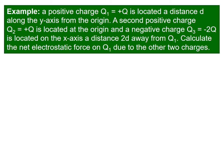For example, a positive charge Q1 is located at distance d along the y-axis from the origin. A second positive charge Q2 equal to plus Q is located at the origin, and a negative charge Q3 equal to minus 2Q is located on the x-axis, a distance 2d away from Q1. What do we have to do?